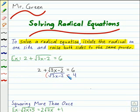Now we can eliminate the radical by squaring both sides. And we'll get 3x minus 2 equals 16. So by adding 2 to both sides and dividing by 3, it looks like x equals 6.